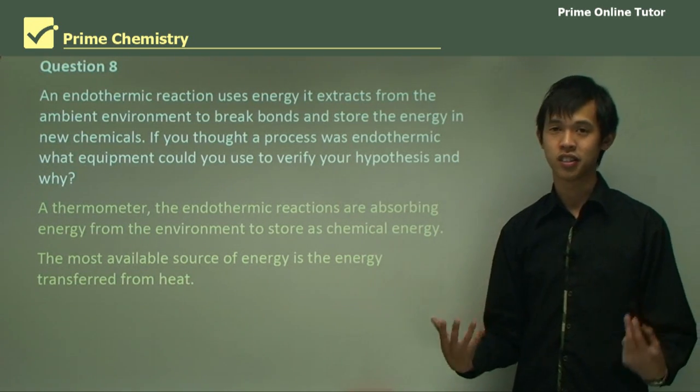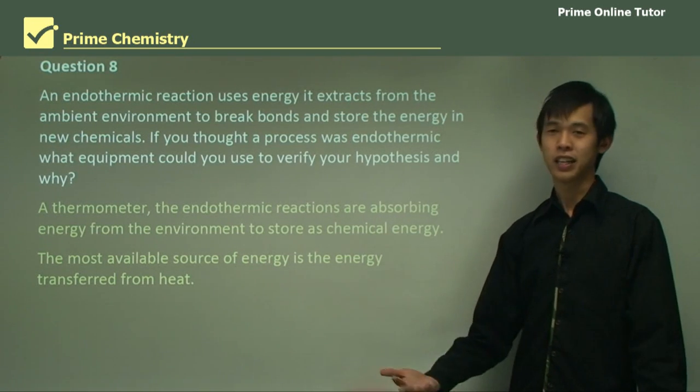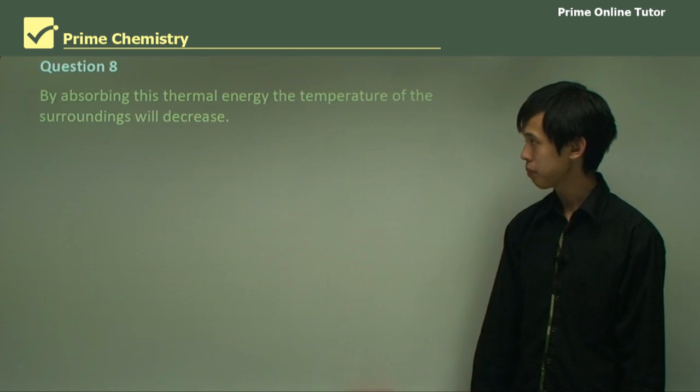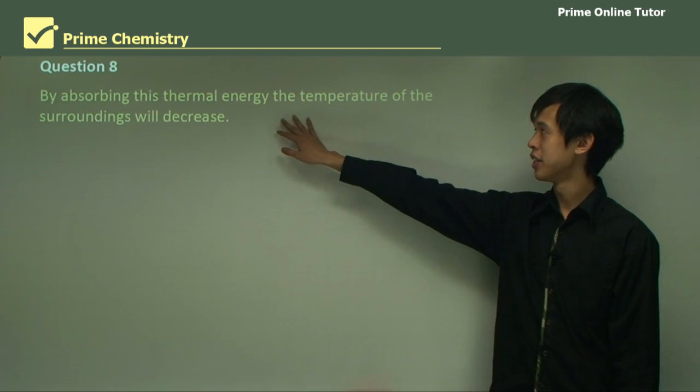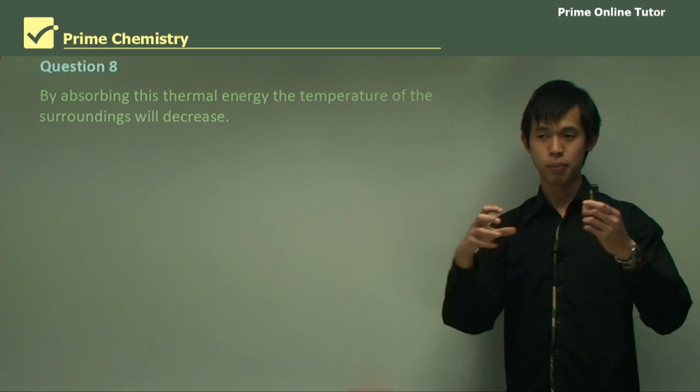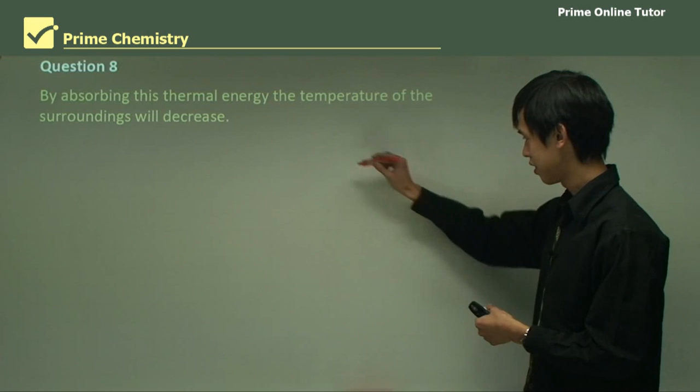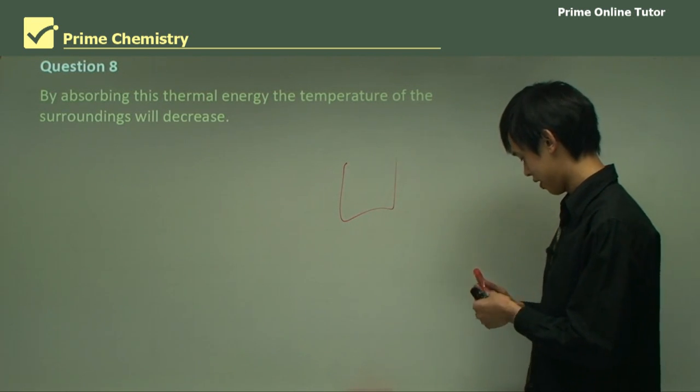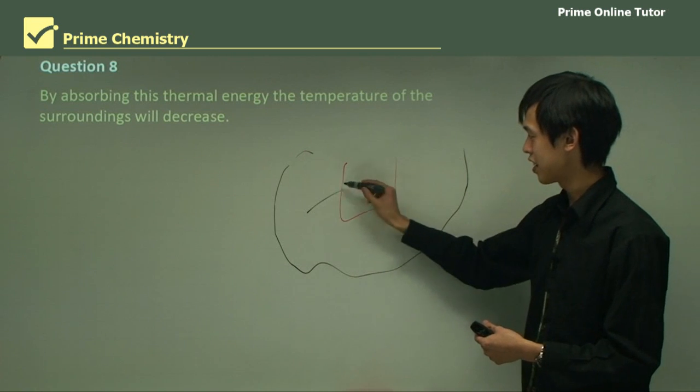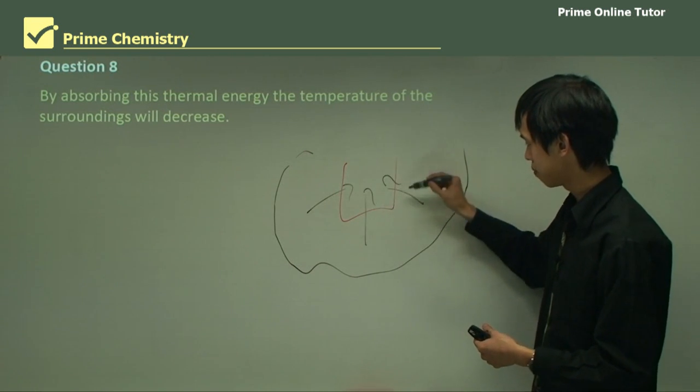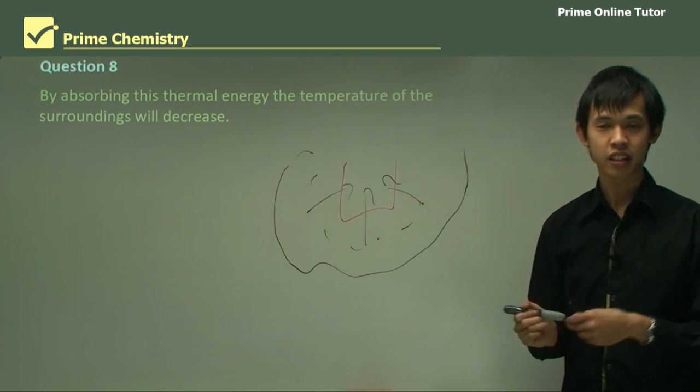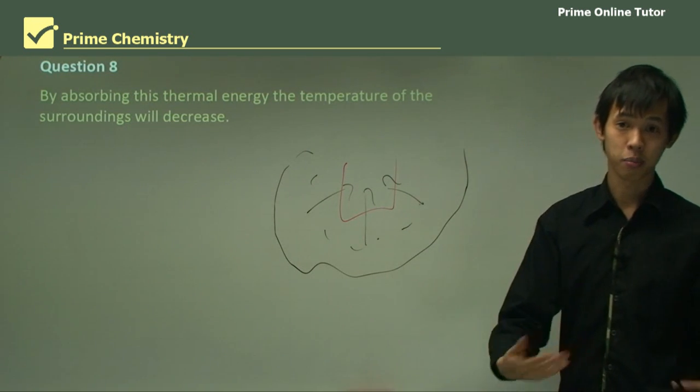So the most available source of energy in the environment is the energy transferred from heat. So heat, thermal energy, is available all the time. So it will likely be the most available one for this system. By absorbing this thermal energy, the temperature of the surroundings will decrease, right? So if you're taking in all the heat, that means that, if we had a container and here's just the area around it, if the heat is all going in here, the temperature out here will obviously decrease, right? Because the heat's going down. There's not as much energy in the form of thermal energy.